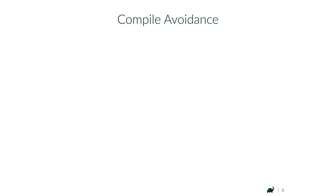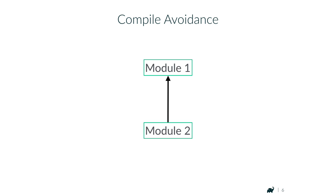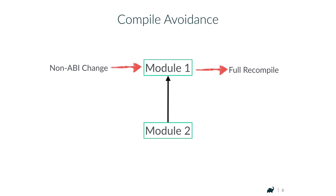The first optimization is called compile avoidance. Assume we have two modules where module 2 depends on module 1. For a build system to provide compile avoidance, it does not need to understand anything about the relationships between the individual classes. When a non-ABI change happens in module 1, module 1 still gets fully recompiled. But it's relatively simple to analyze whether the change has changed the ABI of module 1. If not, we don't need to recompile any dependent modules, because we don't need to understand anything about module 2 to make that call.